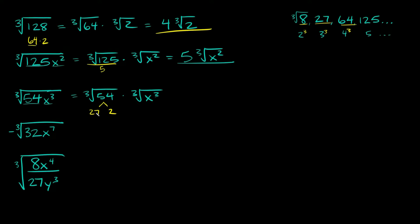You'd want to specifically choose 27 times 2 because we want to use perfect cubes — 27 is a perfect cube. So this becomes the cube root of 27 times the cube root of 2, and then we have the cube root of x cubed, which is simply equal to x. So we multiply by x.